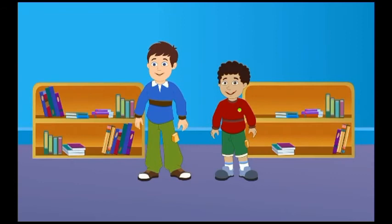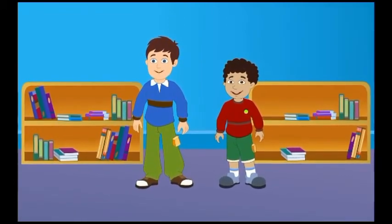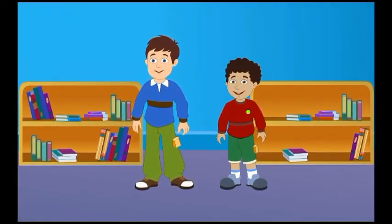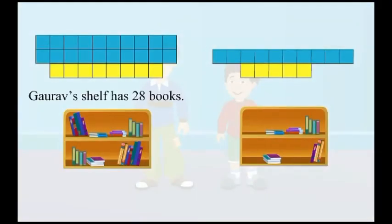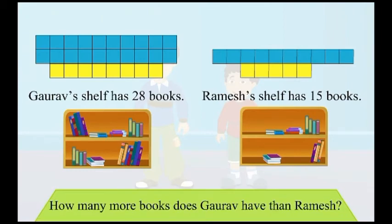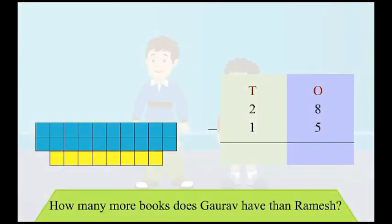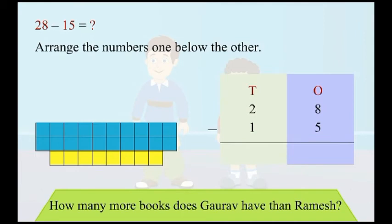Gaurav and Ramesh each have a bookshelf in their rooms. Gaurav's shelf has 28 books and Ramesh has 15 books in his shelf. How many more books does Gaurav have than Ramesh? To find out, we must subtract 15 from 28. Arrange the numbers one below the other.